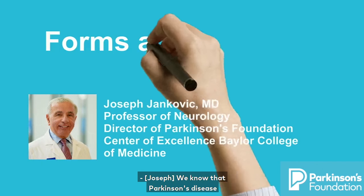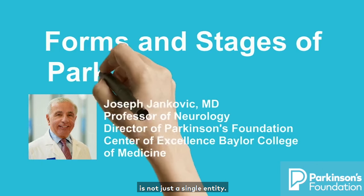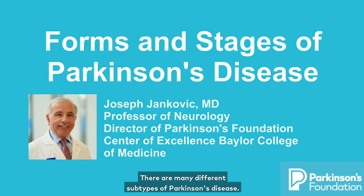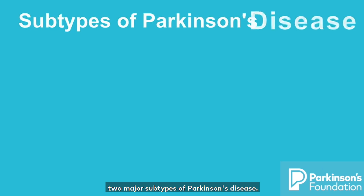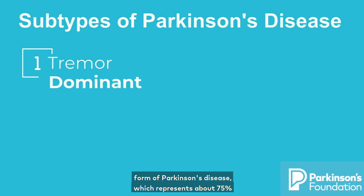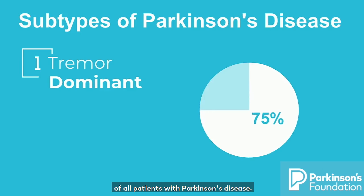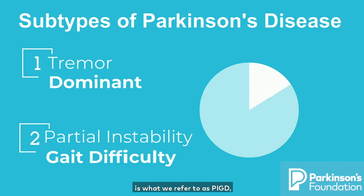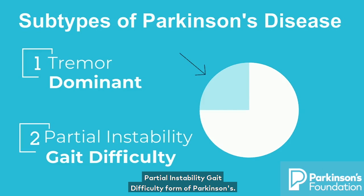We know that Parkinson's disease is not just a single entity — there are many different subtypes. At least 30 years ago we described two major subtypes. One is referred to as the tremor dominant form of Parkinson's disease, which represents about 75% of all patients. The second subtype is what we refer to as PIGD: postural instability, gait difficulty form of Parkinson's.